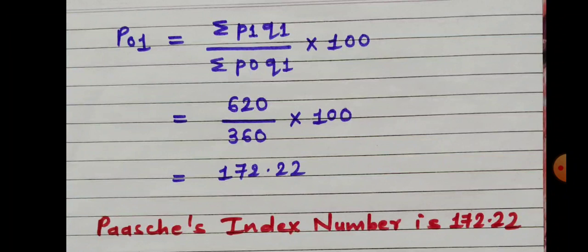Now apply the formula of Paasche's price index number: P01 is equal to Sigma P1Q1 divided by Sigma P0Q1 into 100. Sigma P1Q1 is 620 and Sigma P0Q1 is 360. So 620 divided by 360 into 100, we get 172.22. So Paasche's price index number is 172.22.